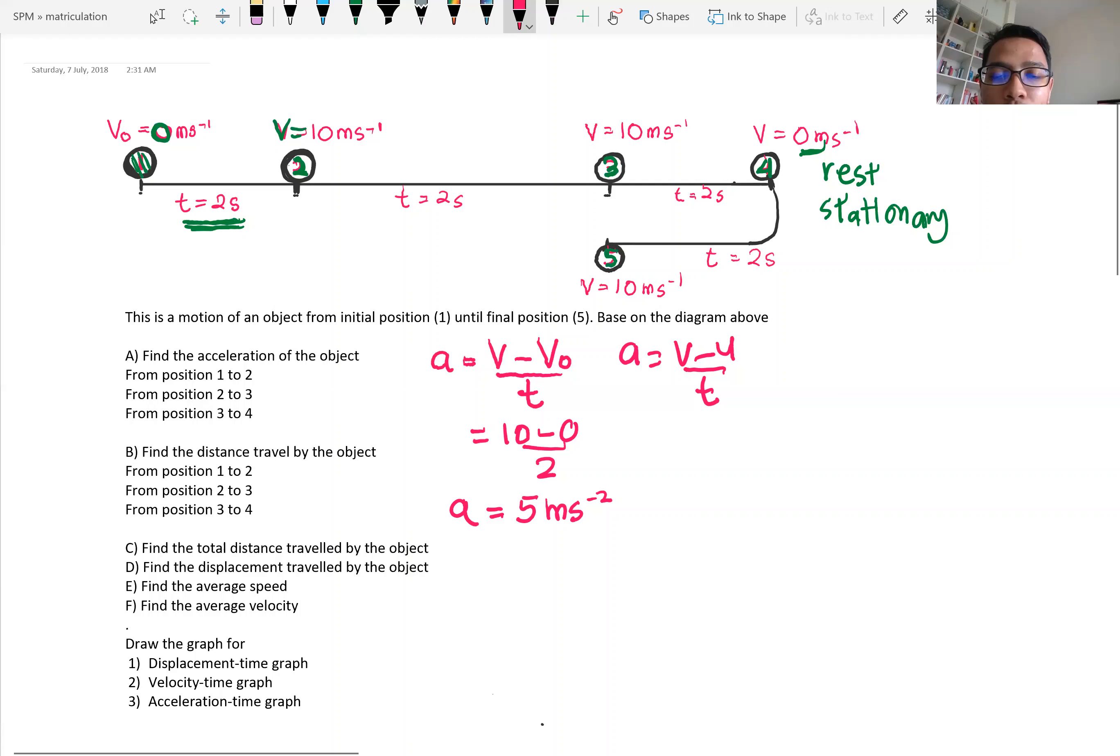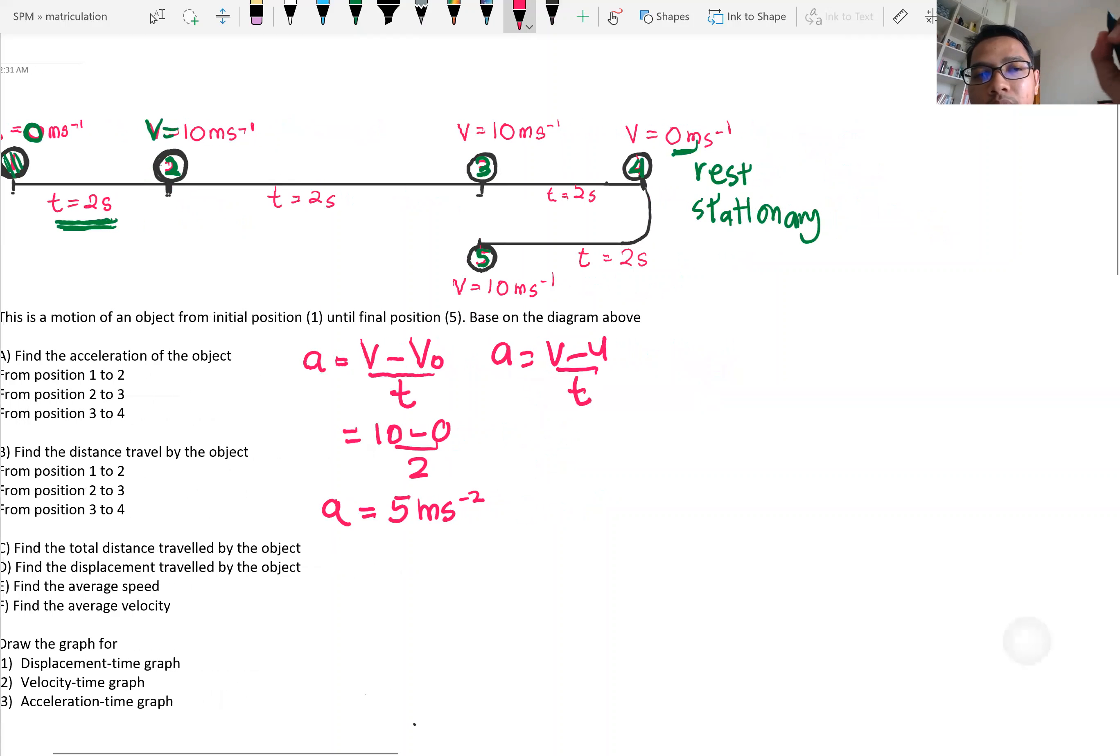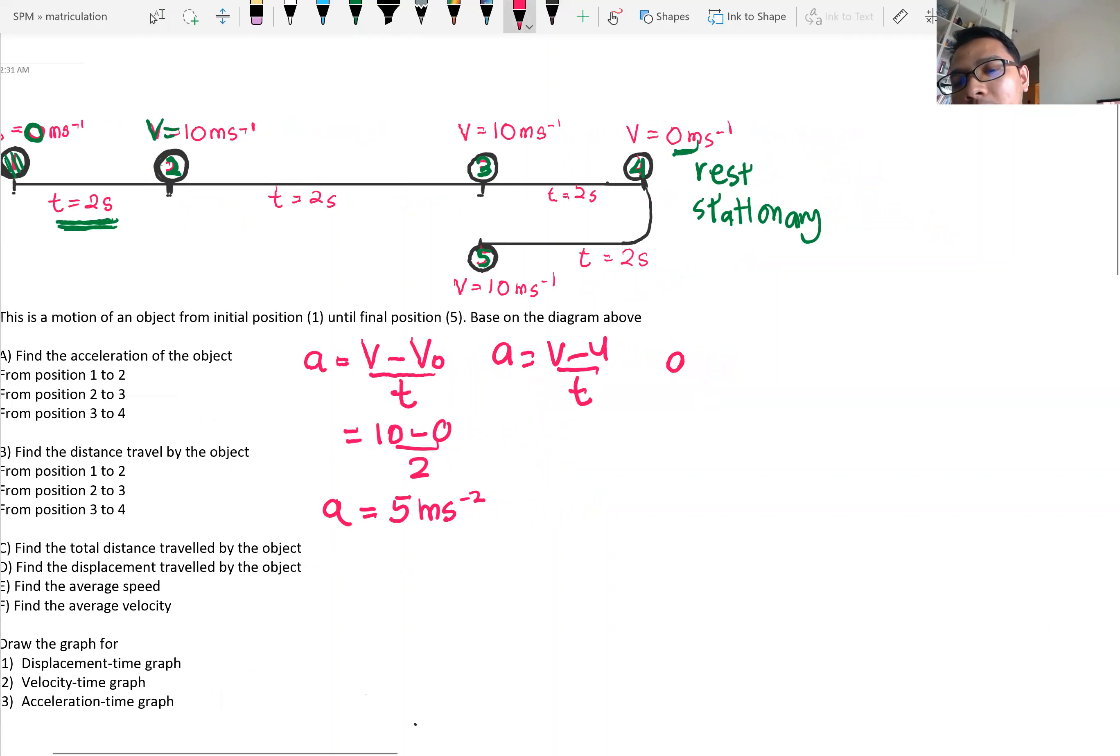From position 2 to 3, acceleration from 2 to 3, same formula, v minus v₀ initial divided by time, so 10 minus 10 divided by 2, so the acceleration here is 0. The object moves but with a constant velocity, there is no acceleration.